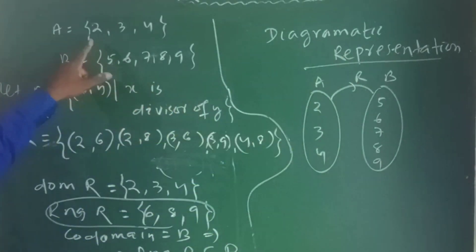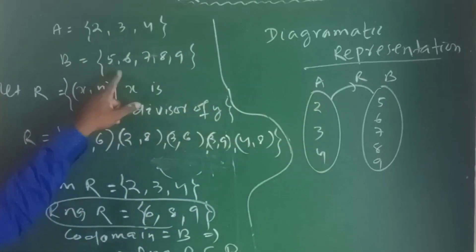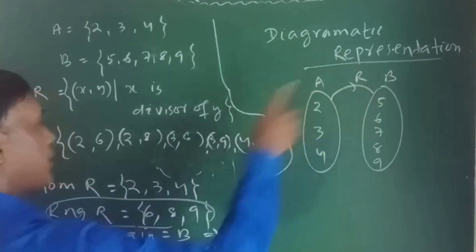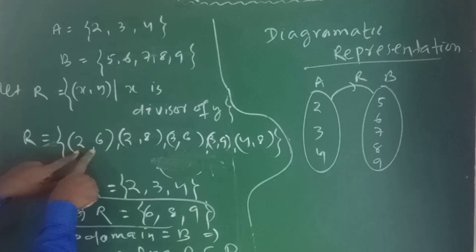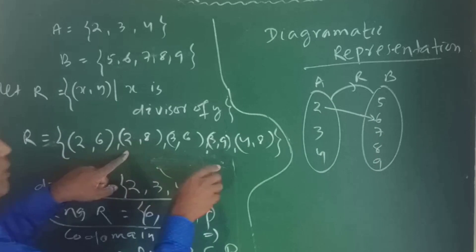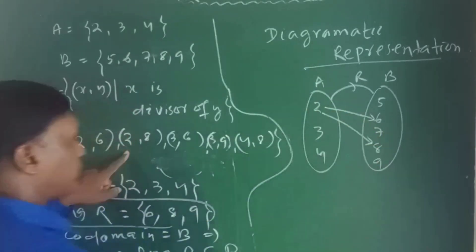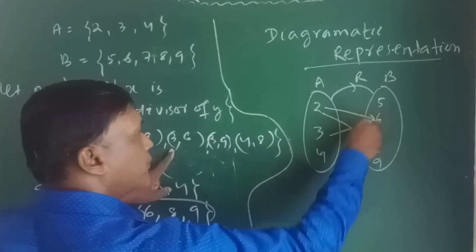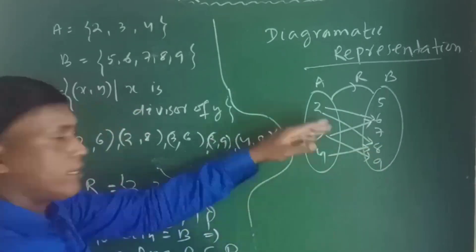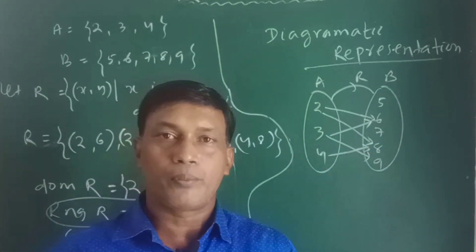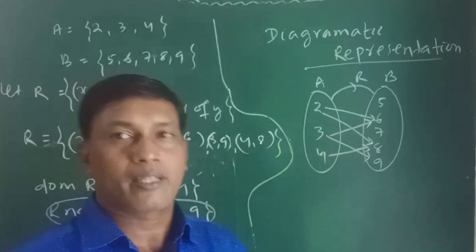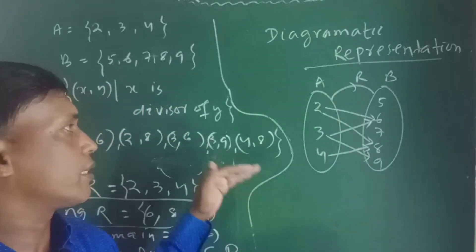For the diagrammatic representation: set A consists of {2,3,4} and set B consists of {5,6,7,8,9}. R is a relation from A to B. We draw arrows: 2 → 6, 2 → 8, 3 → 6, 3 → 9, 4 → 8. This is the diagrammatic representation. The relation moves from one set to another, and the arrow marks represent the relation between the elements.